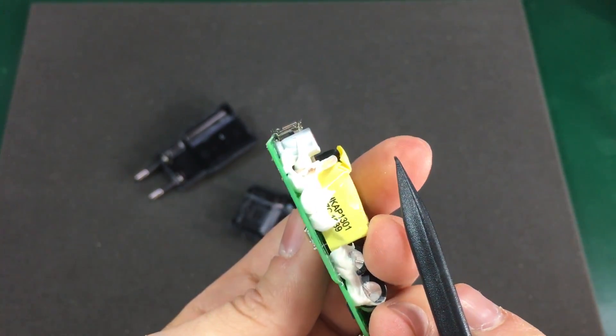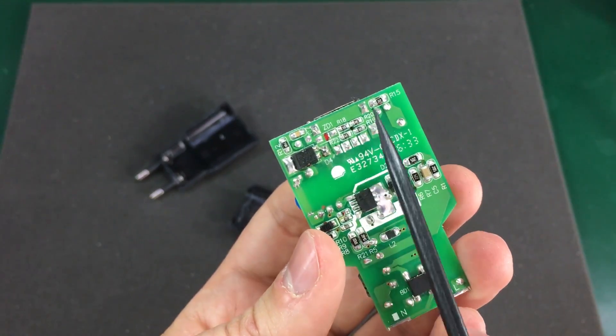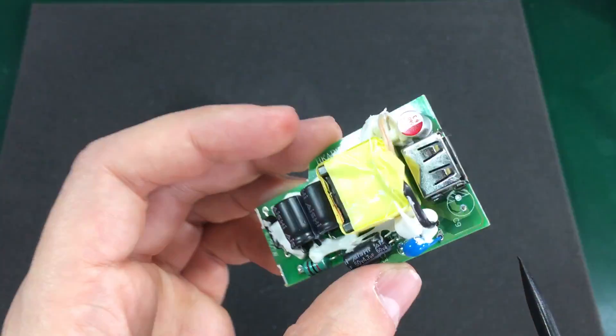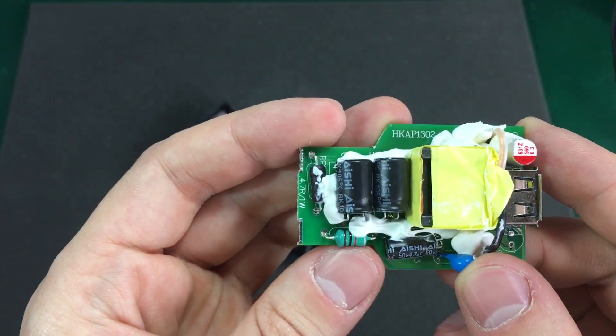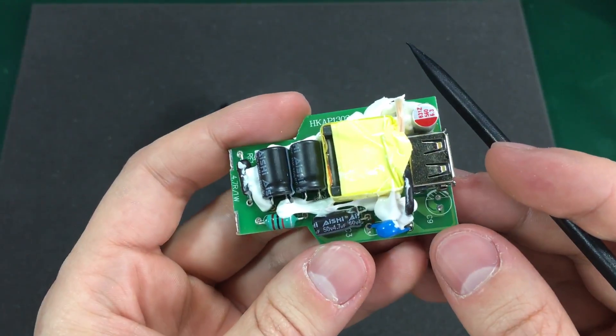Not seeing any shunt resistor. I'm not sure how they do that and how would they bring the signal back to the primary side for control. But that's about it with this PCB module.